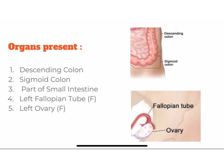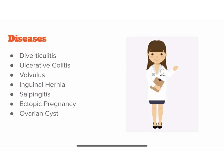The organs present here are the descending colon, sigmoid colon, a part of the small intestine, left fallopian tube and left ovary in females. The diseases here are diverticulitis, ulcerative colitis, volvulus, inguinal hernia, salpingitis, ectopic pregnancy, and ovarian cysts.